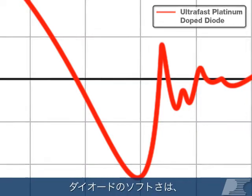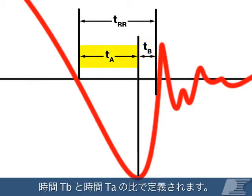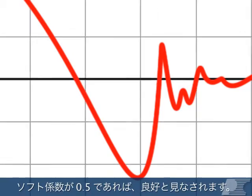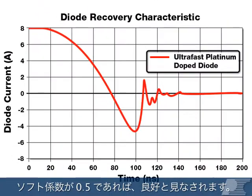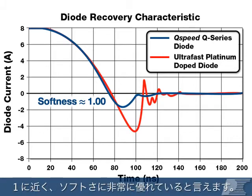The softness of a diode is defined as the ratio of time TB to time TA. This snappy diode, for example, has a softness of 0.2. A softness factor of 0.5 is considered good. Q-Speed Diodes have excellent softness, with factors close to one for the Q-Series family.